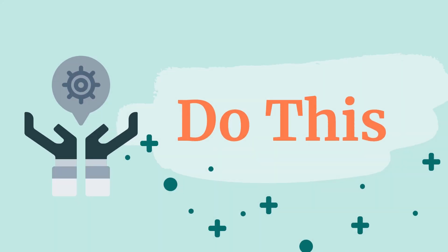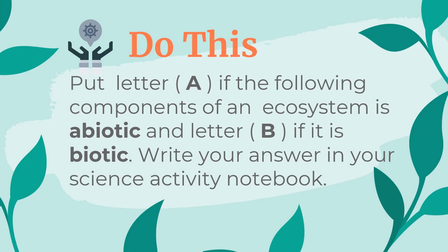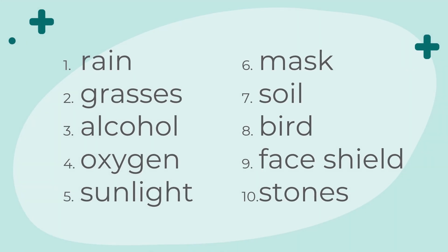Do this first activity. Put letter A if the following components of an ecosystem is abiotic and letter B if it is biotic. Write your answer in your science activity notebook. Let us start: 1. Rain. 2. Grasses. 3. Alcohol. 4. Oxygen. 5. Sunlight. 6. Mask. 7. Soil. 8. Bird. 9. Facial shield. 10. Stones.